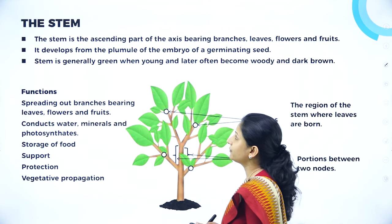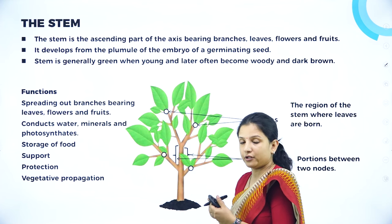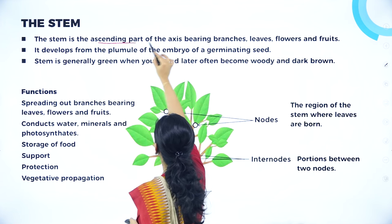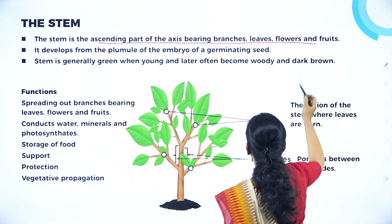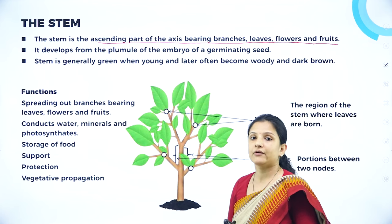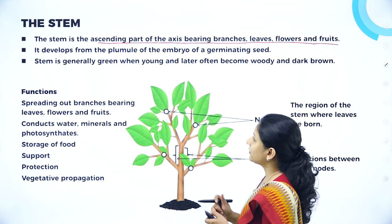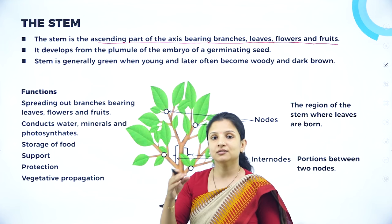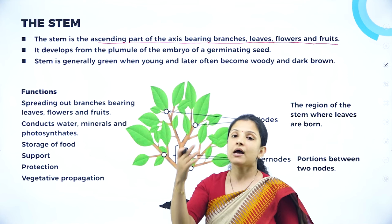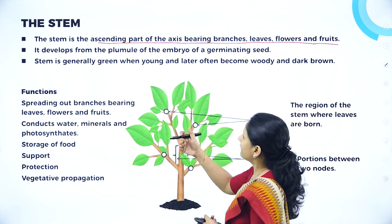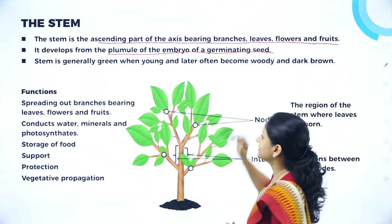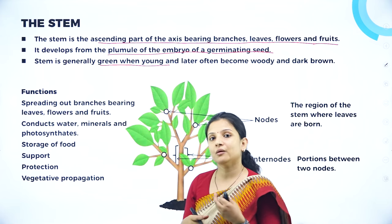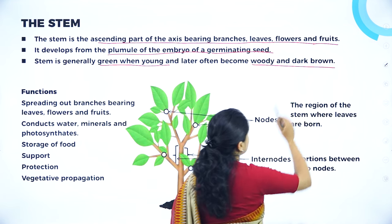Moving on to the stem. Stem is the aerial part of the plant. It is the ascending or aerial part of the axis which has branches, leaves, flowers, and fruits. All these develop from the stem. The stem develops from the plumule of the embryo of a germinating seed — the plumule portion gives rise to the stem or shoot, and the radicle portion gives rise to the root. Younger stems are green in color, and as they mature they become woody and dark brown in color.